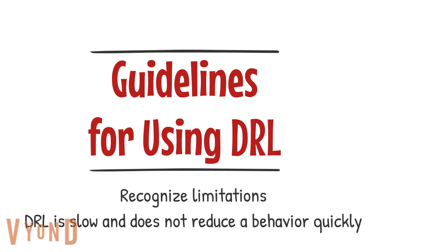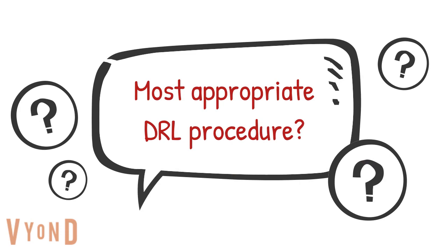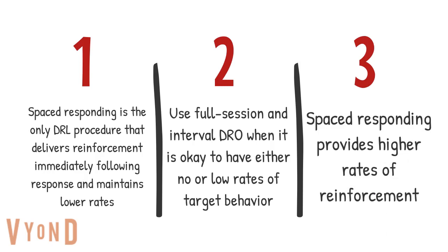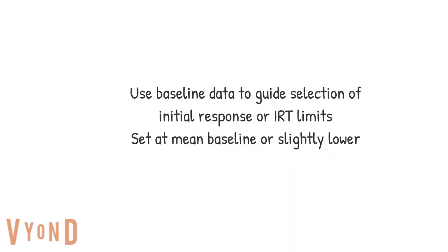It's important to recognize the limitations of DRL. It is slow and does not reduce behavior quickly, nor does it eliminate the behavior. When choosing which DRL procedure to use, spaced responding is the only DRL procedure that delivers reinforcement immediately following a response and maintains lower rates. Use full session and interval DRL when it's acceptable to have either no or low rates of the target behavior. Spaced responding provides higher rates of reinforcement. Use baseline data to guide selection of initial response limits or IRT, setting at the mean baseline or a little below.